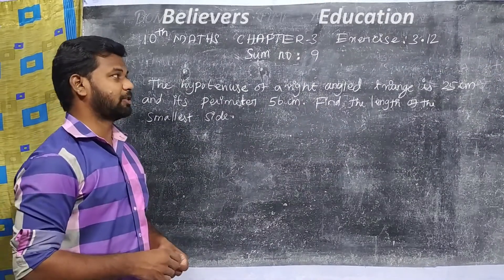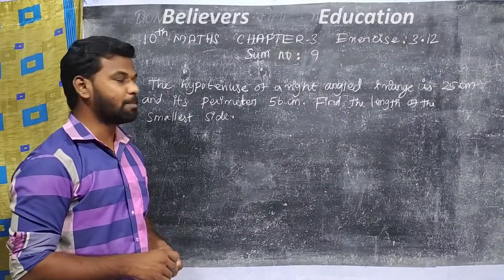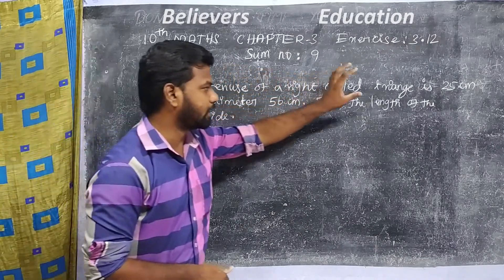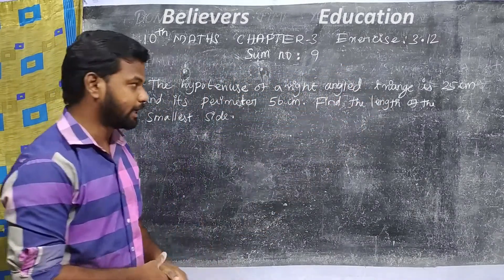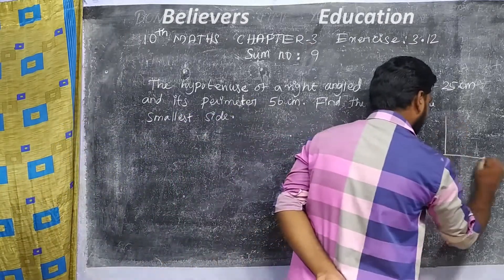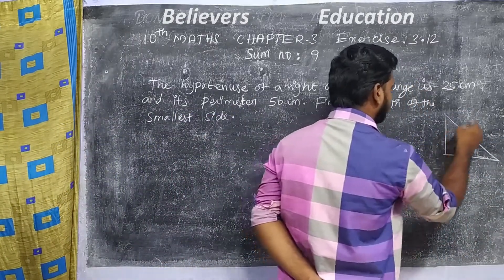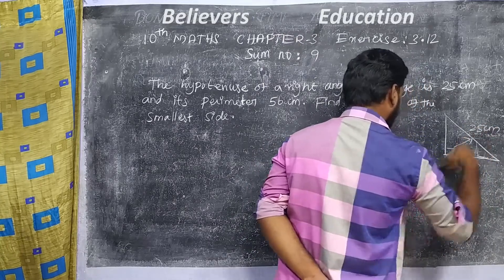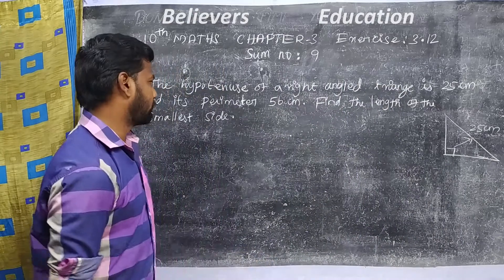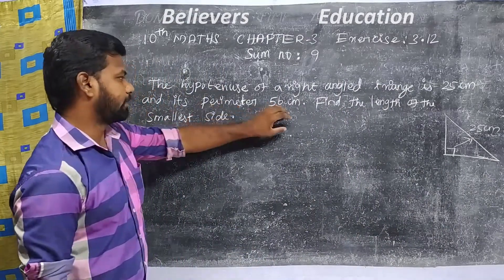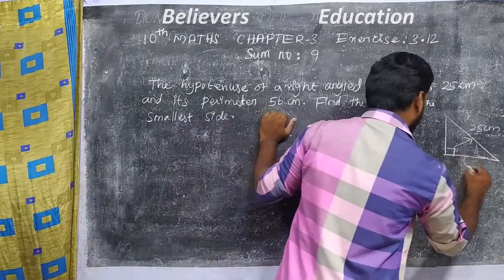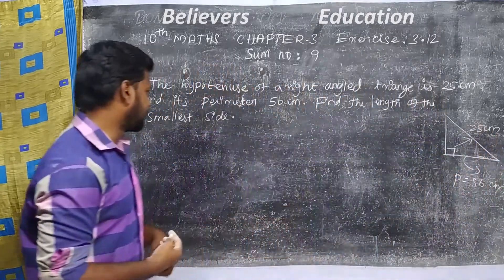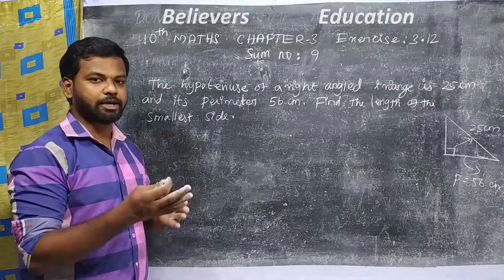Hi students. What are we going to look at in 10th standard Chapter 3, Exercise 3.12? The hypotenuse of a right angle triangle is 25 cm, and its perimeter is 66 cm. We need to find the smaller side length of the right angle triangle.